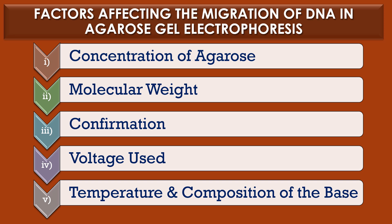The third factor is conformation — the fastest moving DNA is supercoiled DNA, followed by linear and relaxed open circular forms. The fourth factor is voltage used — at low voltage, the rate of migration is precisely proportional to the applied voltage. When the voltage is increased, the mobility of higher molecular weight DNA fragments increases differentially. The fifth factor is temperature and composition of the buffer — running the gel at temperatures ranging from 4 to 30 degrees Celsius does not affect the mobilities.